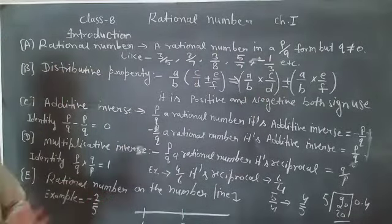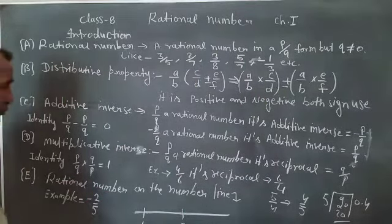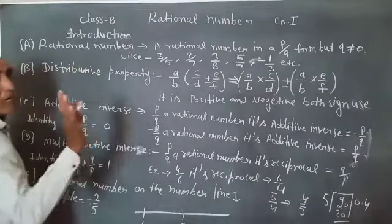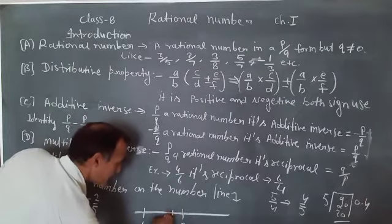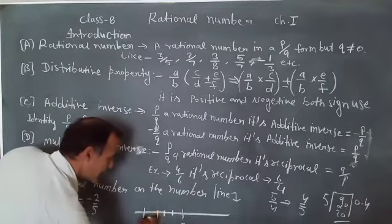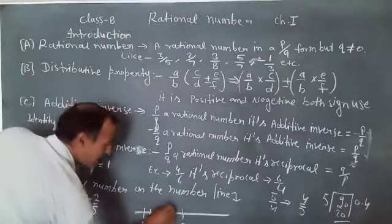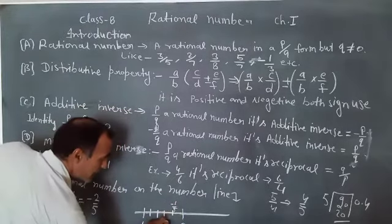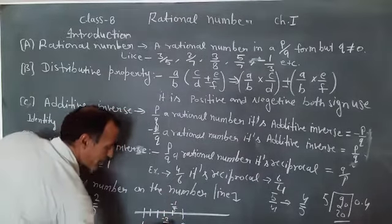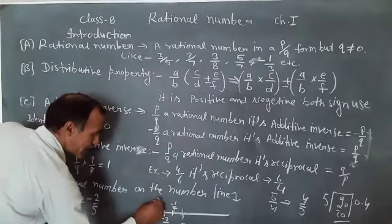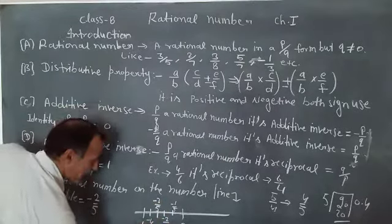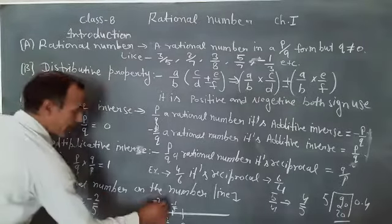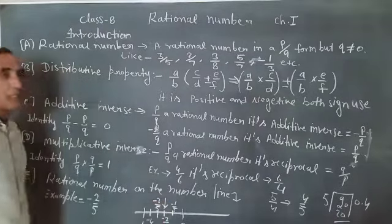So it is minus 2 upon 5 between of the 0 and 1. So we divide 0 to 1 in 5 times: 1, 2, 3, 4, 5. So here minus 1 upon 5, it is minus 2 upon 5, it is minus 3 upon 5, it is minus 4 upon 5. So our number is minus 2 upon 5.